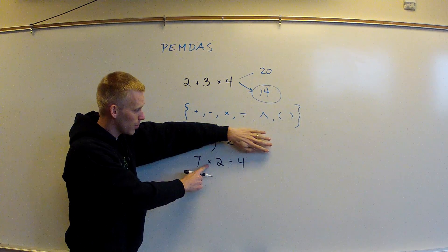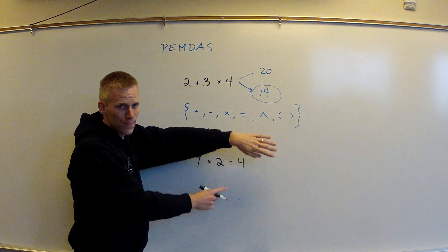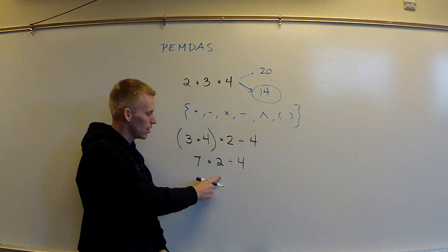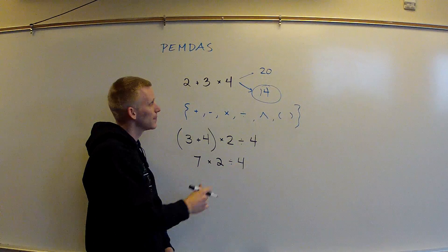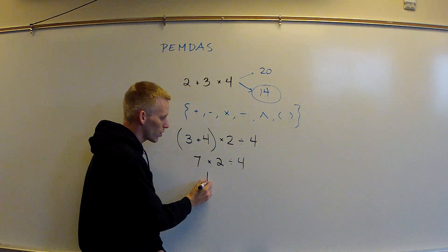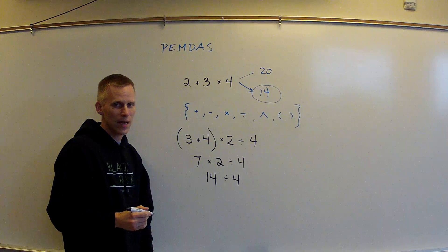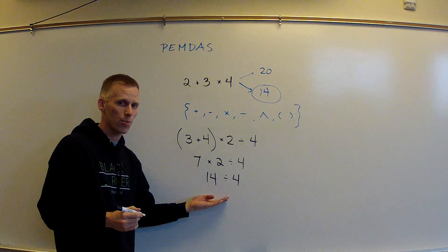Now what's left is we have a multiplication and we have a division. Well, seven times two is going to come first because it comes first in the order. Seven times two is 14. And we have 14 divided by four, leaving us just one operation.